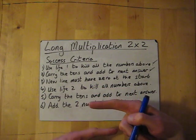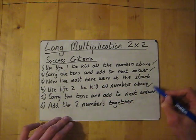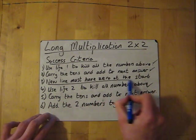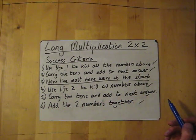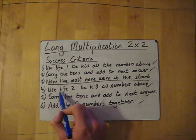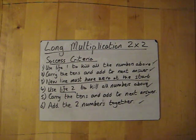And then finally, add the two numbers together. So the one that will help you out here, the main one, is making sure that the new line must have a zero at the start when you go on to the second life. But I'll show you what that means now.